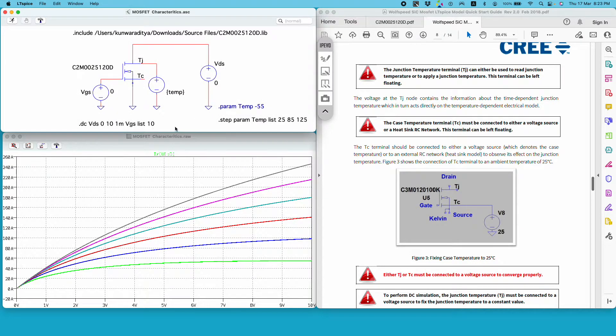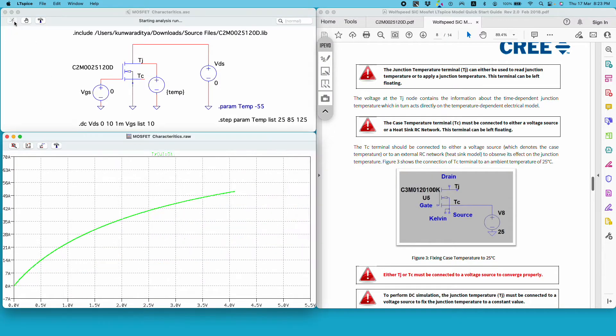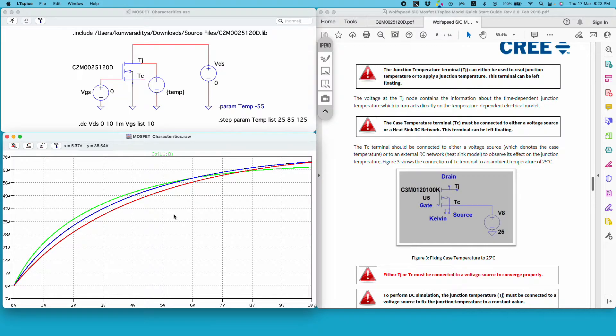Since this is too much I will just plot for one VGS so that you can observe the effect of temperature variation on the plot. If I run it you see you get three different curves. Green is for 25 degrees Celsius, blue is for 85 degrees Celsius and red is for 125 degrees Celsius.